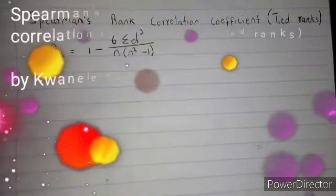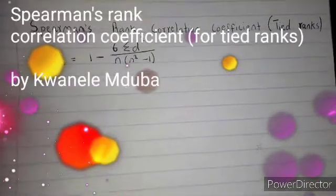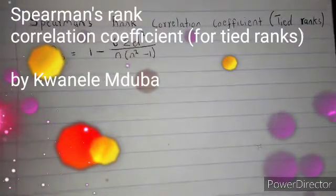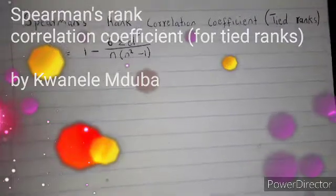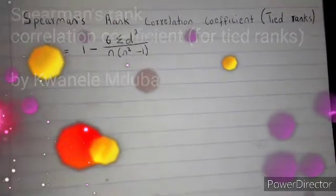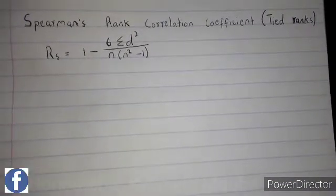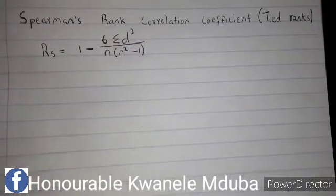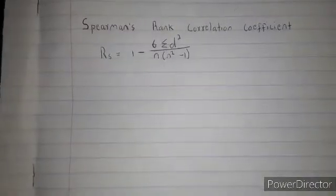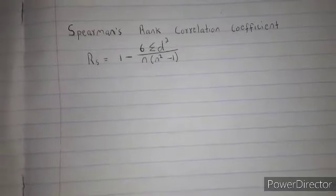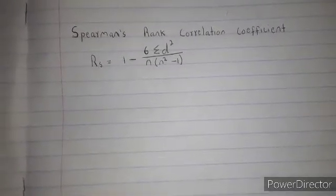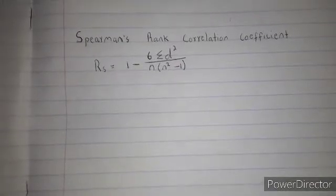Hi guys, welcome to another video. This is Guanile Mduba. In this video I'm going to show you how to calculate the Spearman's rank correlation coefficient for tied ranks. Tied ranks are where two items in a column have the same rank. There's a table on question five — the marks obtained by 12 girls who seldom attend classes, for test 1 and test 2. There's the formula; you don't have to determine x and y, it is unnecessary.